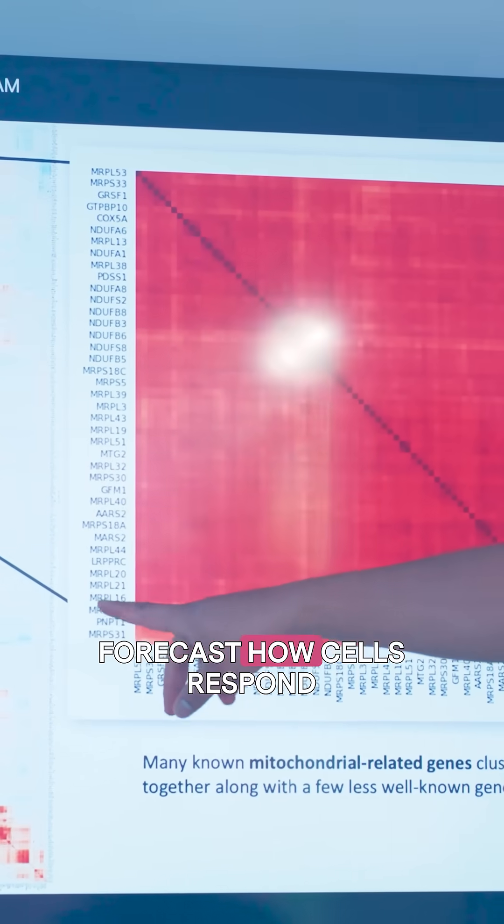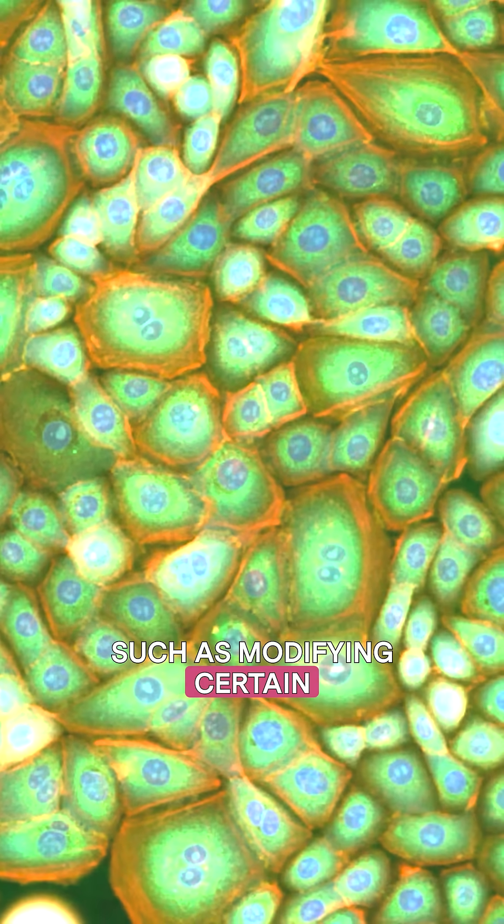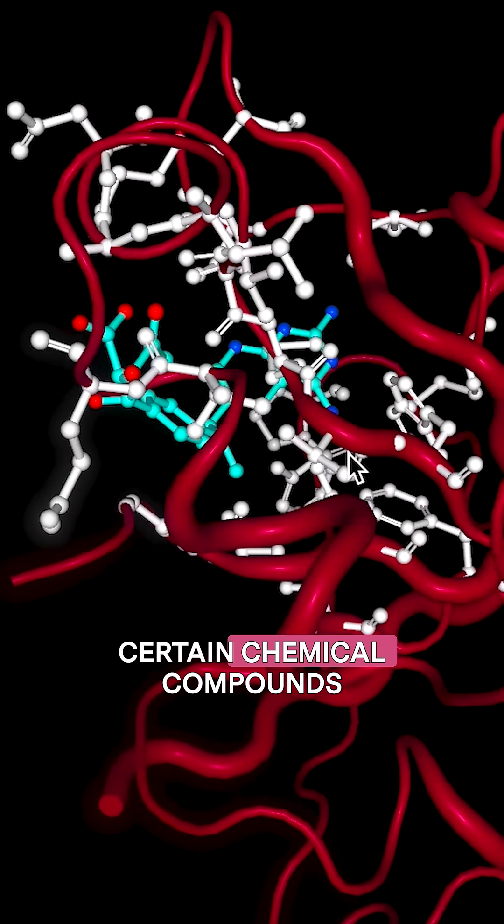Predict lets us forecast how cells respond when we change something, such as modifying certain genes or introducing certain chemical compounds.